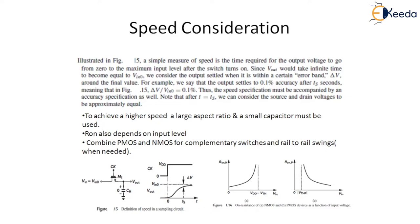Since it takes finite time to become equal to V_in0, we consider the output settled when it is within a certain error band, delta V, around the final value. For example, we can say that the output settles to 0.1 accuracy after T_a seconds, as shown in the figure.